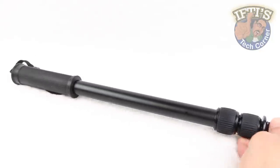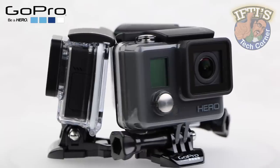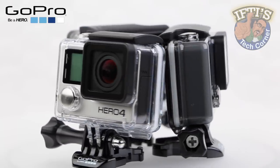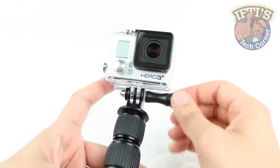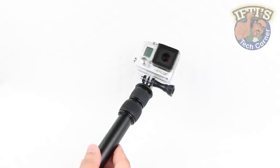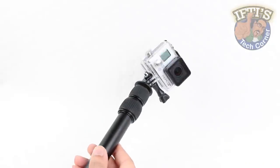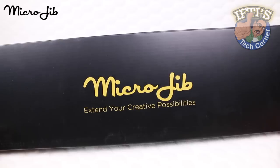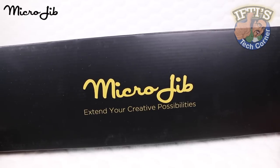There's no shortage of extendable poles on the market for use alongside small yet powerful cameras such as the GoPro, although they all have one limitation: the lack of camera movement once mounted on the end of the pole. Not anymore, thanks to a revolutionary new product, the Microjib.